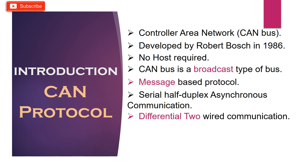CAN is a two-wire communication protocol, which means all nodes are connected to each other through a two-wire bus. The wires are a twisted pair with 120-ohm characteristic impedance connected at each end.